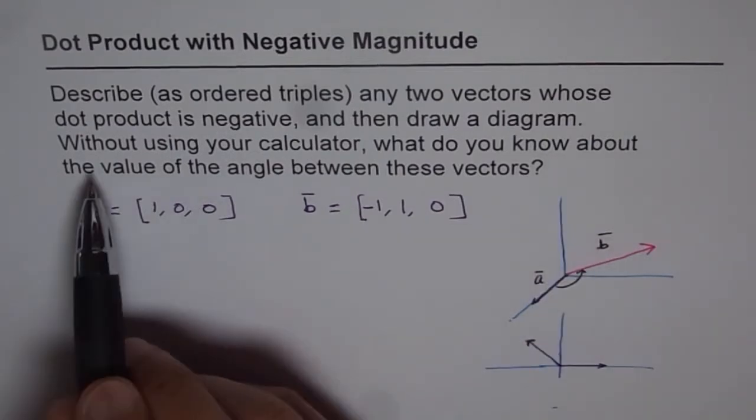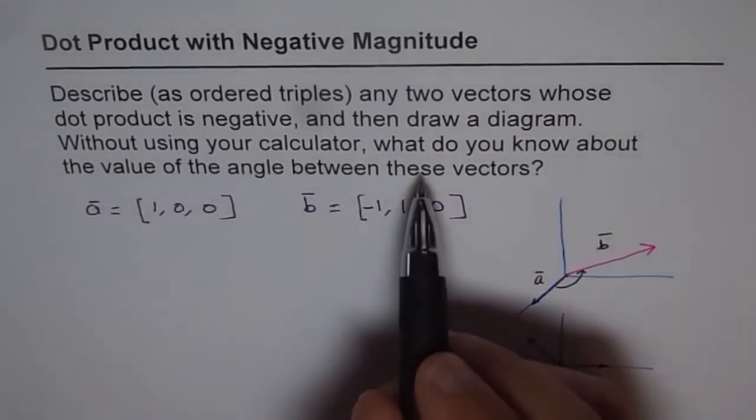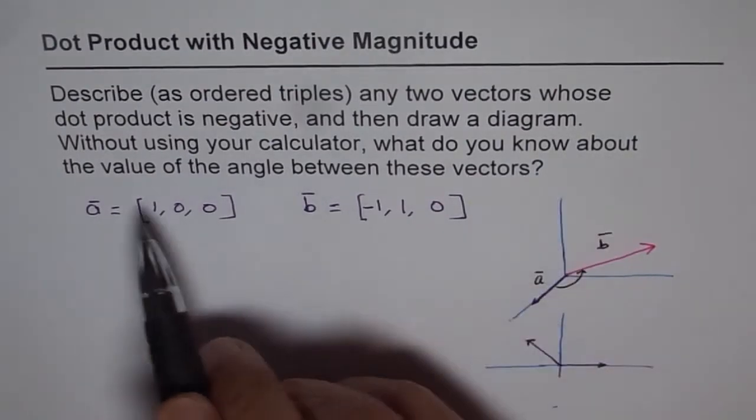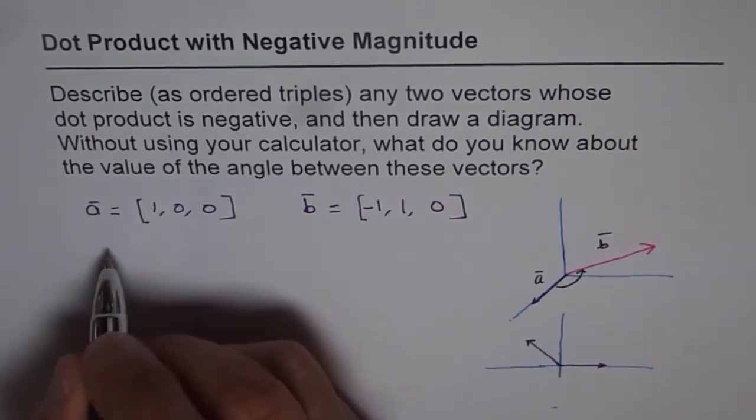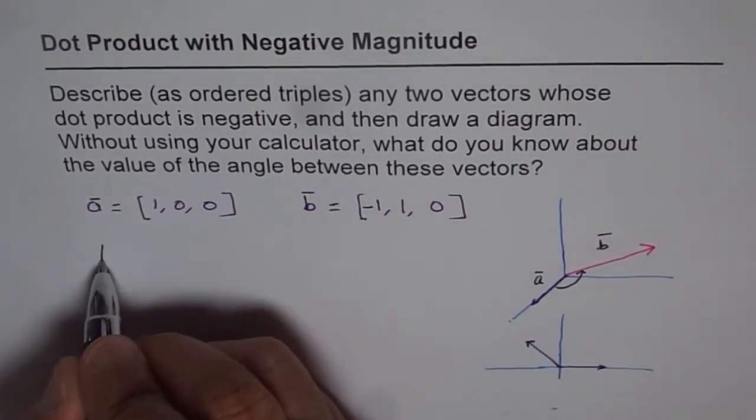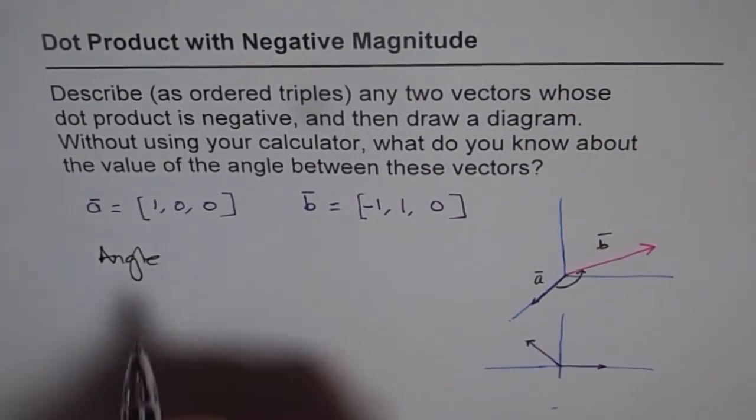Now the second part of this question is, without using your calculator, what do you know about the value of the angle between these two vectors? So we know one thing about it, and that is the angle between them is obtuse.